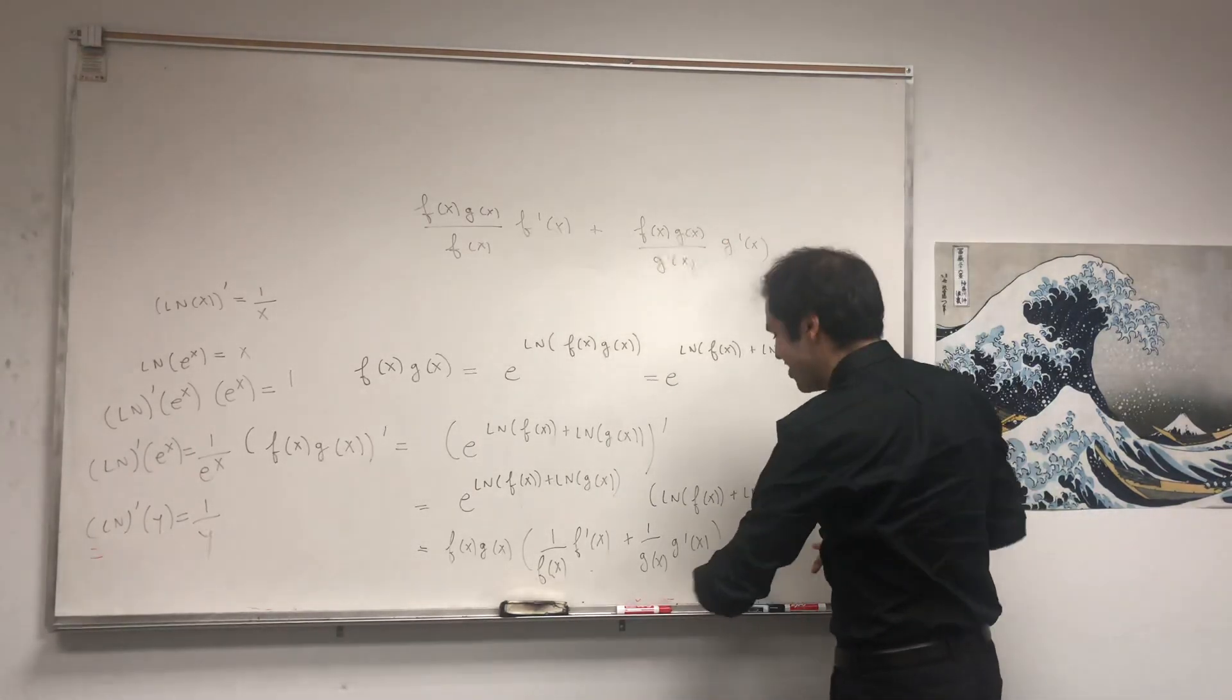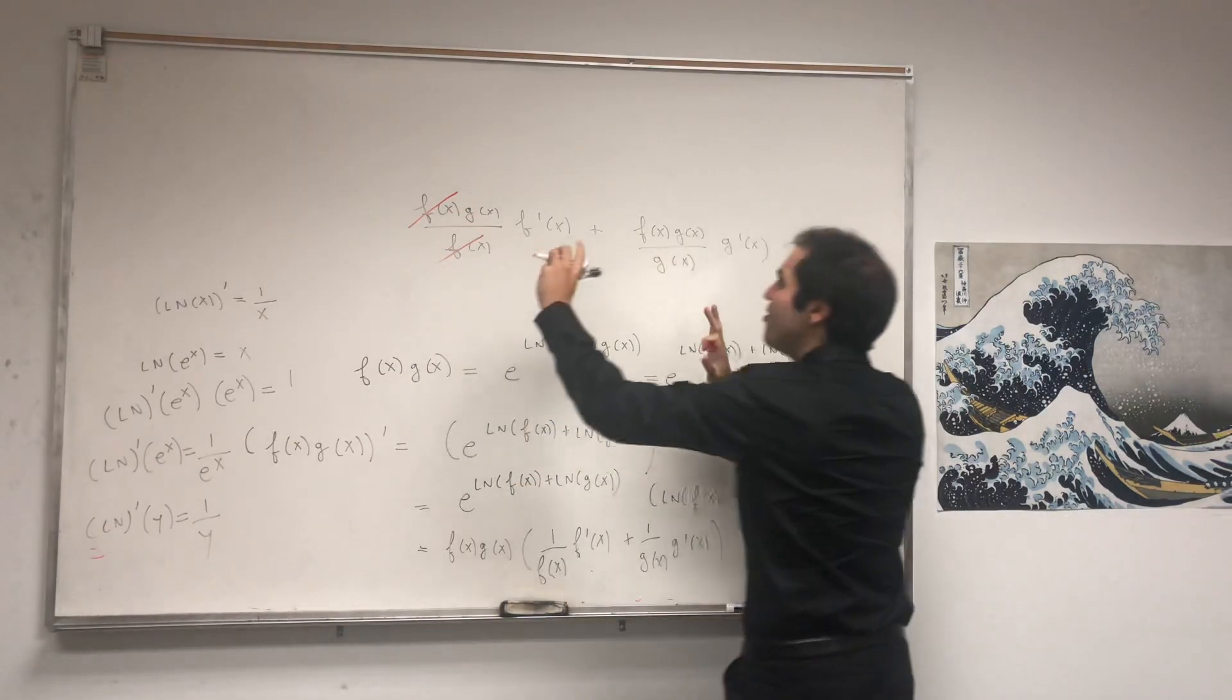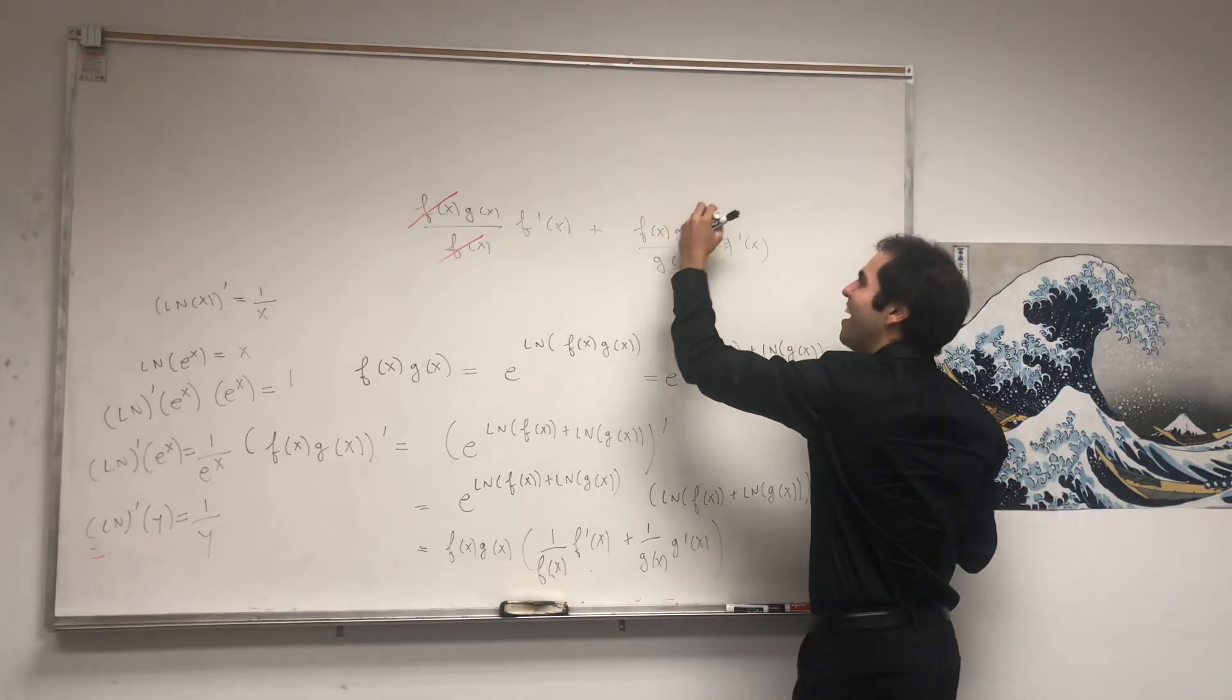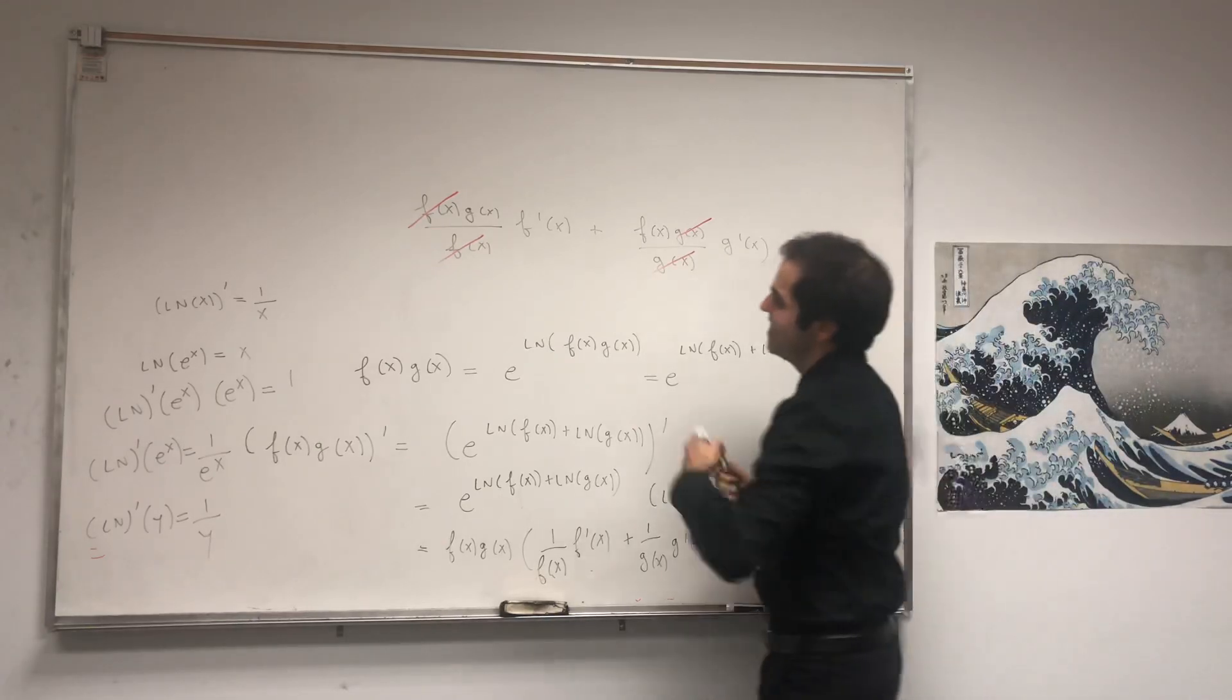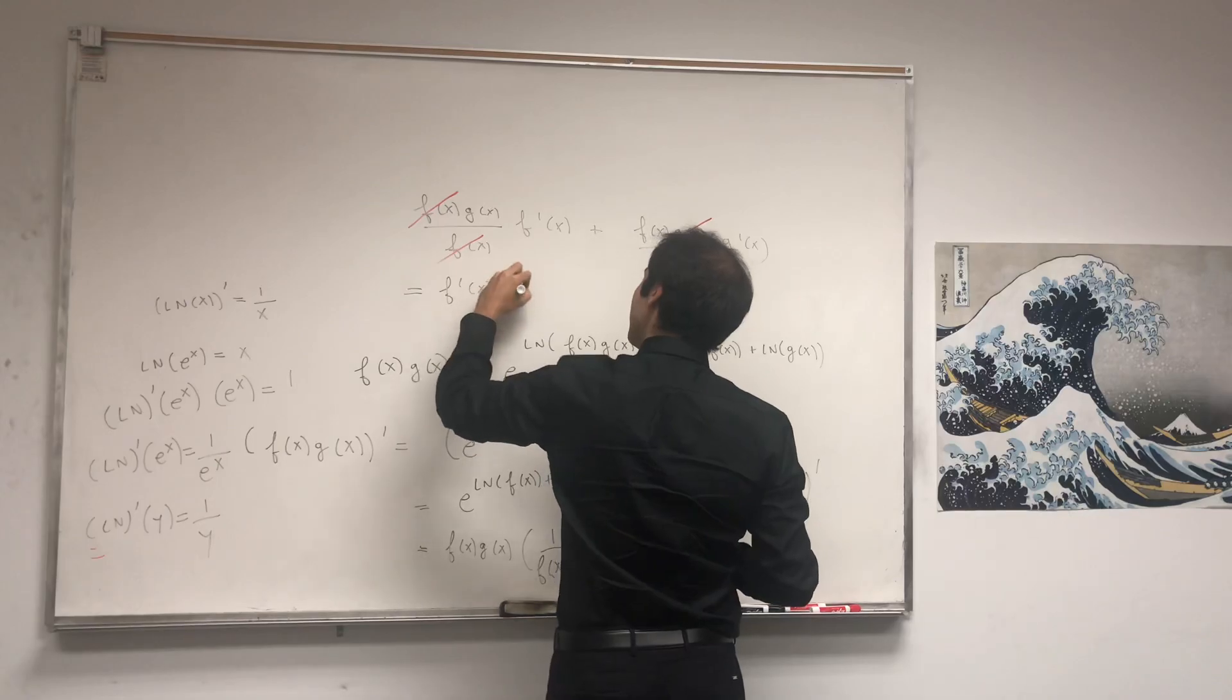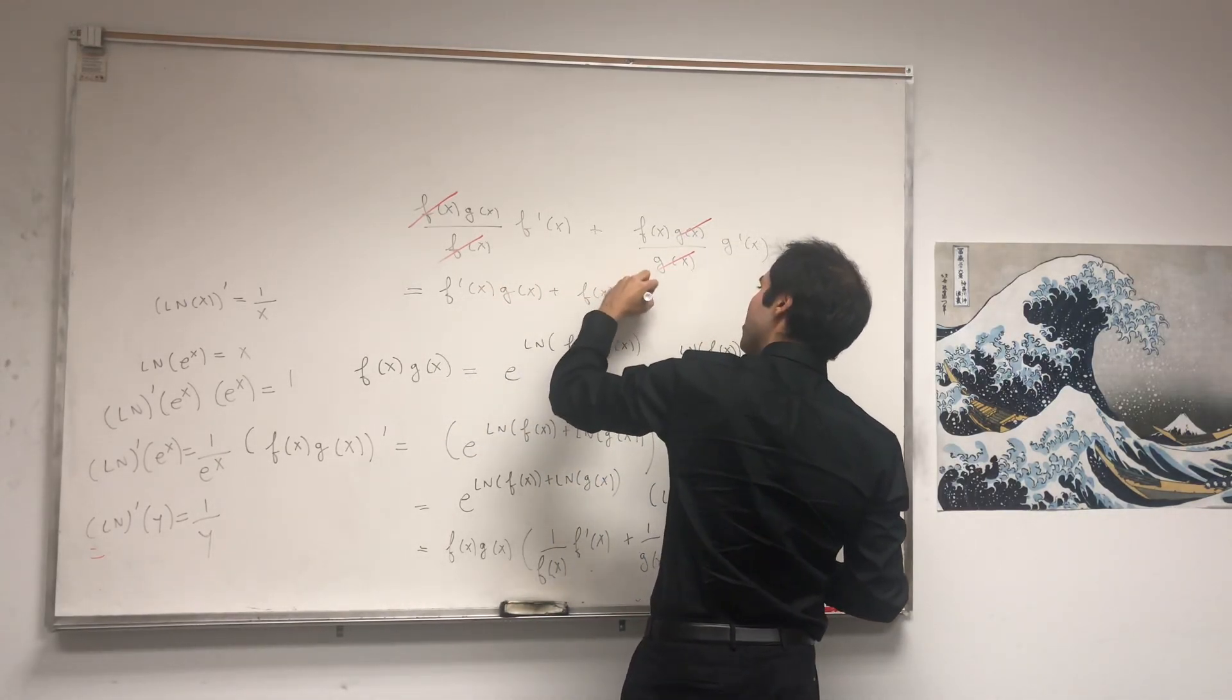The terms we don't want cancel out. I know I'm running out of marker ink, but that doesn't mean we're going to run out of awesomeness, because in the end we get f' of x g of x plus f of x g' of x.